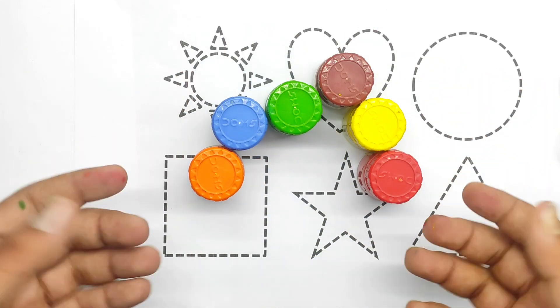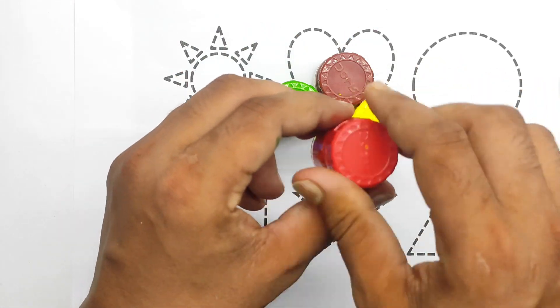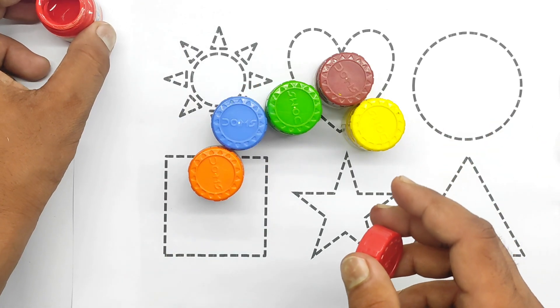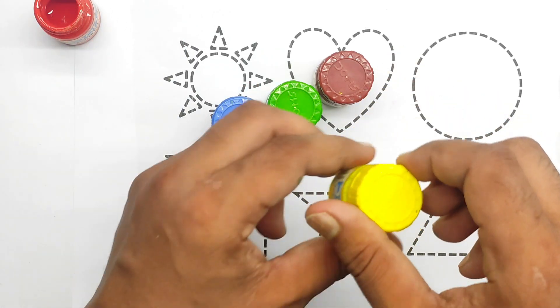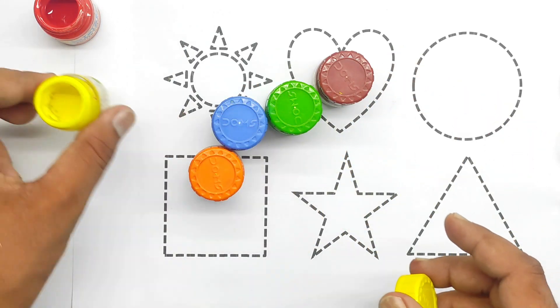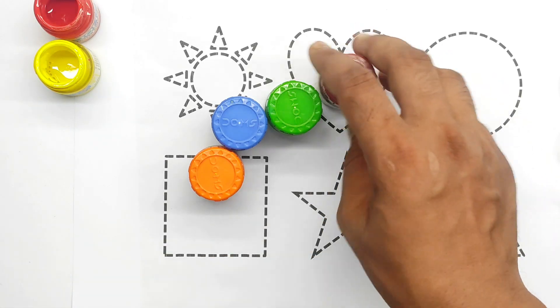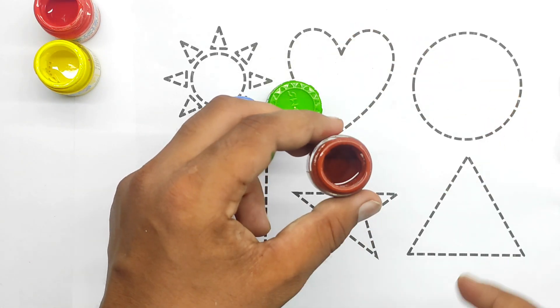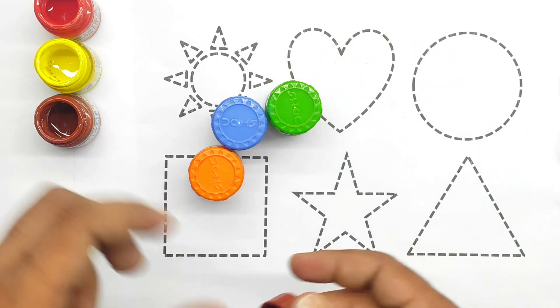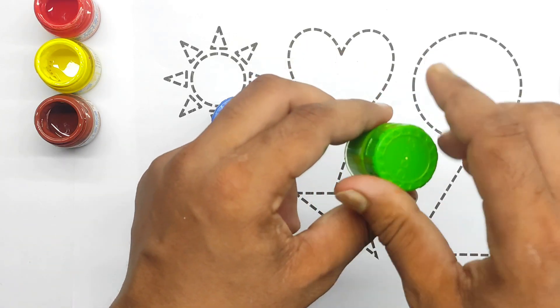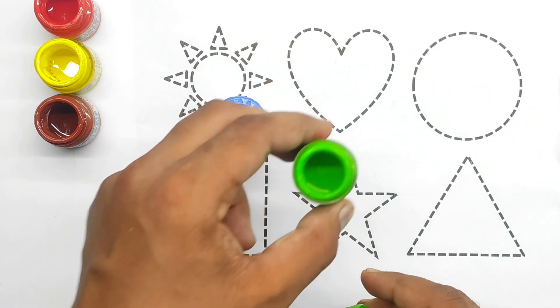This is color. Red color, yellow color, brown color, light green color.